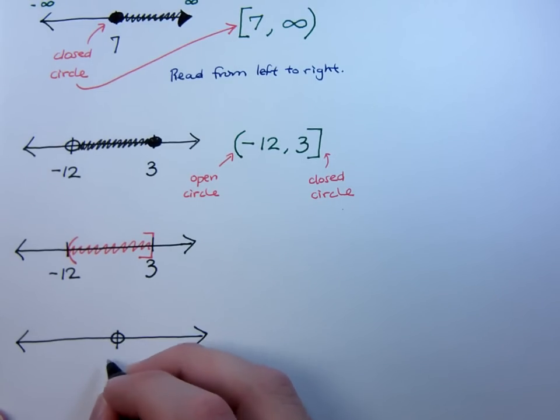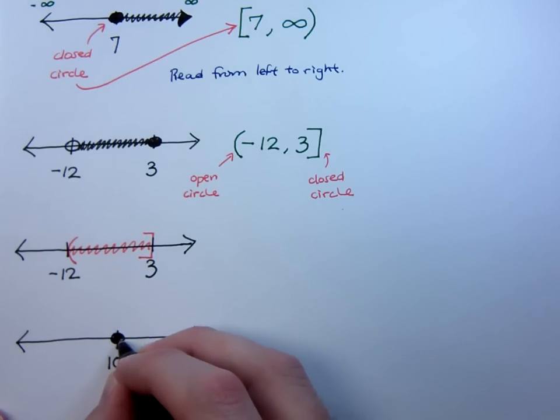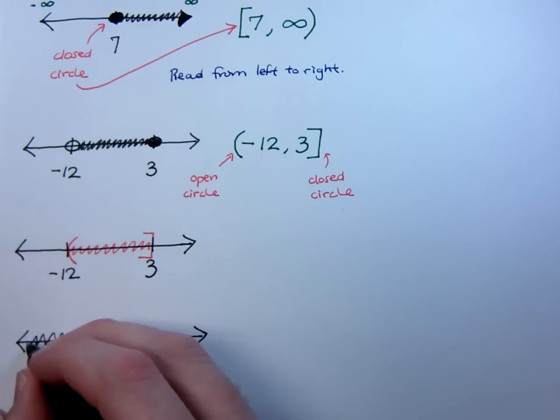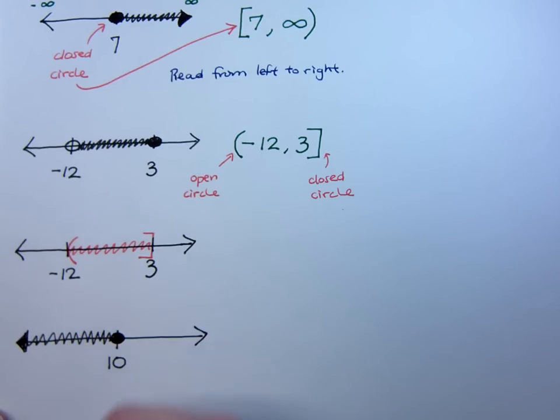So suppose I have this interval, and I suppose this number is 10, closed circle, and all of my solutions are going out to the left. Keeping in mind that I need to be able to read this from left to right to put it in interval notation.